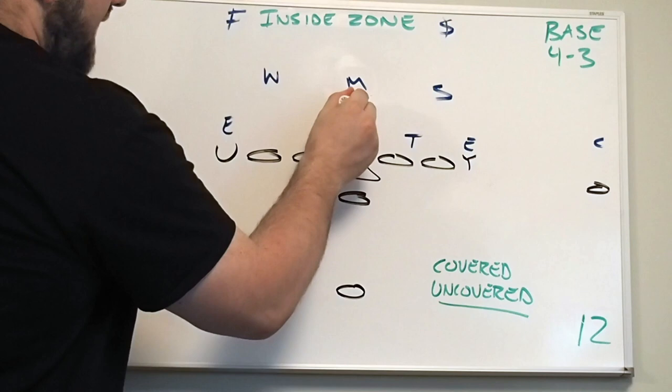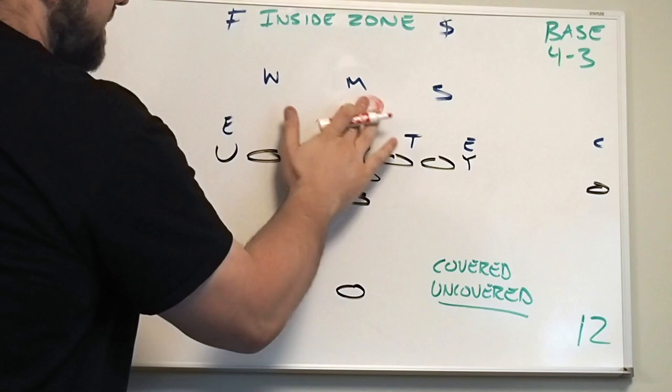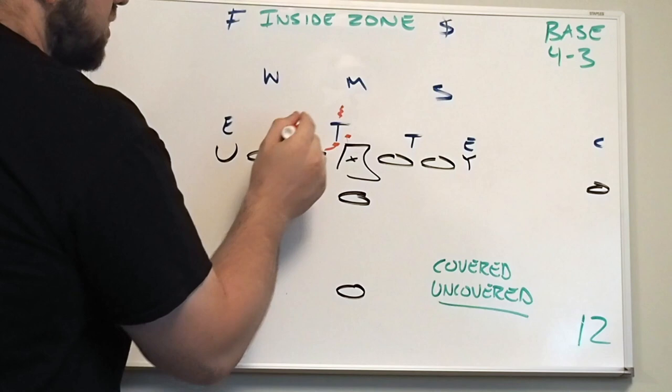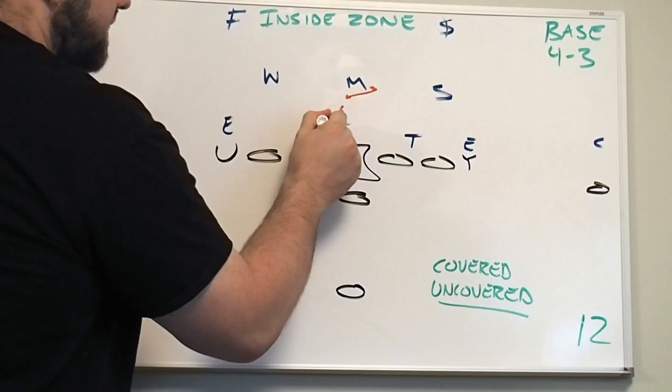So you really want to take your time on this double team and make sure that you do a good job of moving the defensive tackle to the mike. You have time to wait for the mike to declare himself because he might move this way and then come back. Then the guard will come off and block him and the center will stay on the defensive tackle.